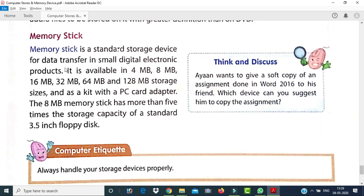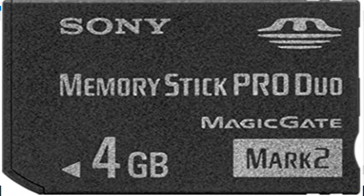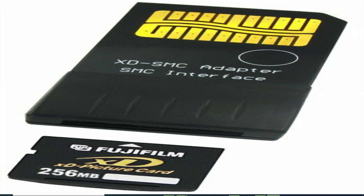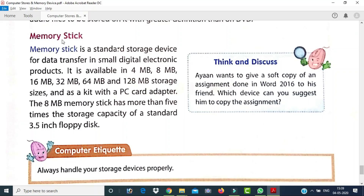The last storage device is the memory stick. A memory stick is a standard storage device used for data transfer in small digital electronic products. It is available in storage sizes from 4 MB to 120 MB and comes as a kit with a PC card adapter. The 8 MB memory stick has more than five times the storage capacity of a standard 3.5-inch floppy disk. Memory sticks are portable and have greater capacity in comparison to floppy disks.